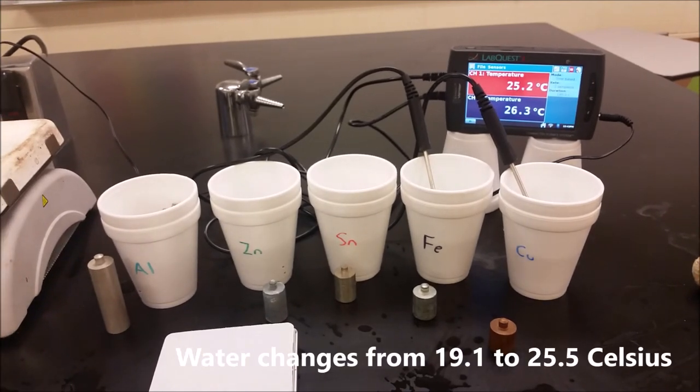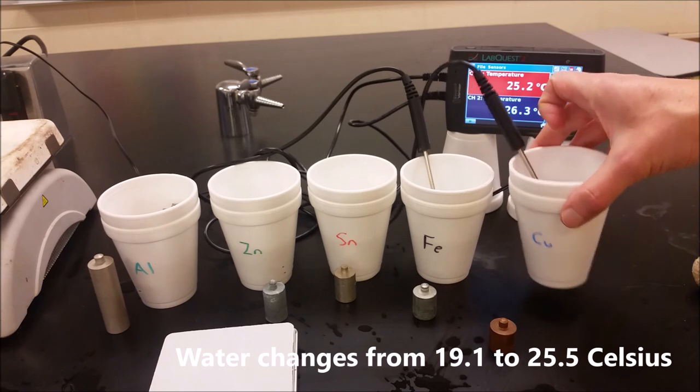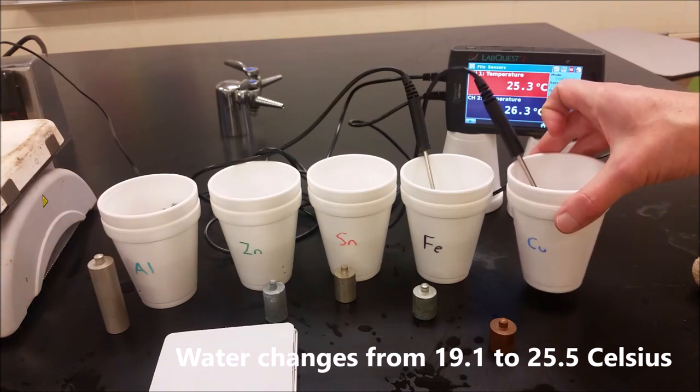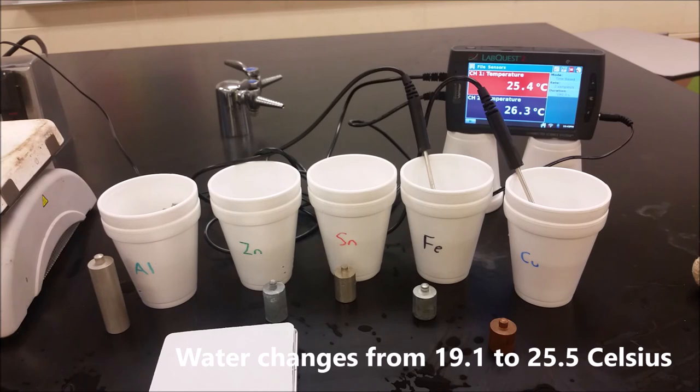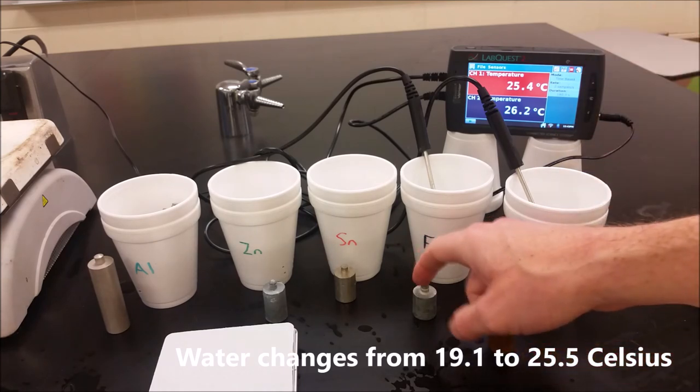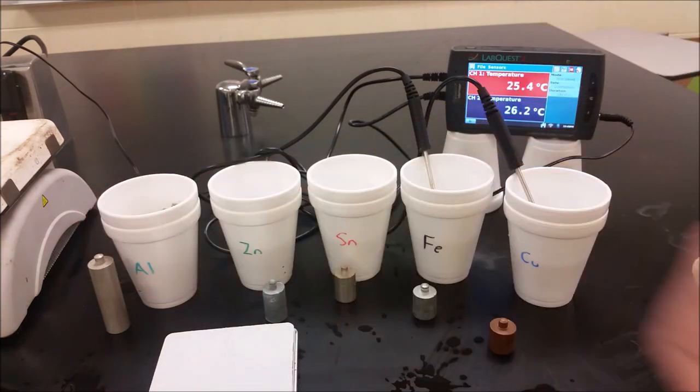So the question is, why is the metal capable of changing temperature by such a larger amount than the water? We have 58 grams of metal combining with 58 grams of water. We're seeing these drop by 60, 70 degrees. We're seeing the water go up by five to maybe 11 or 12. And so the question is, why what's going on?